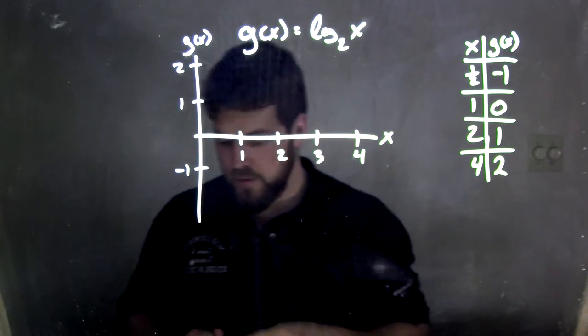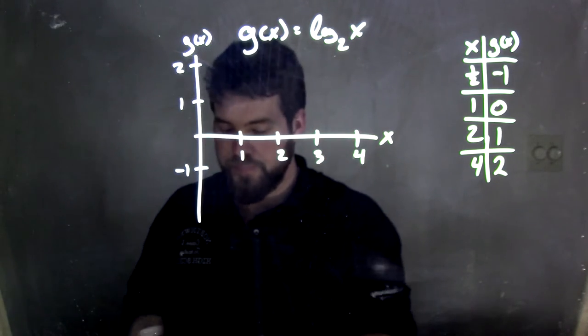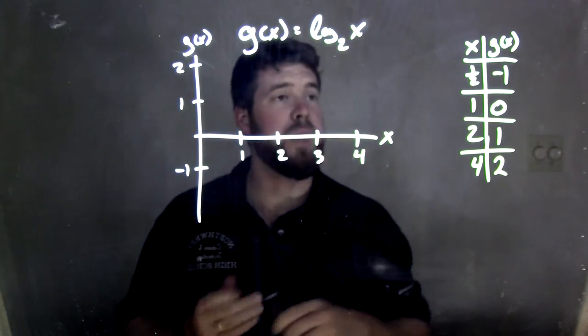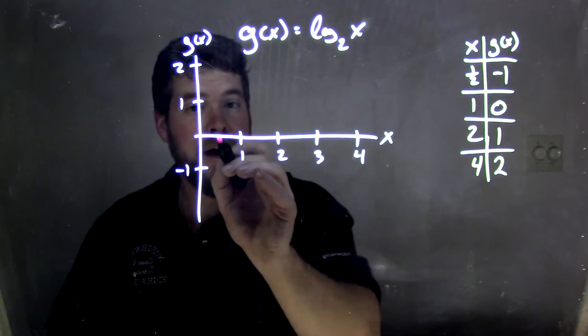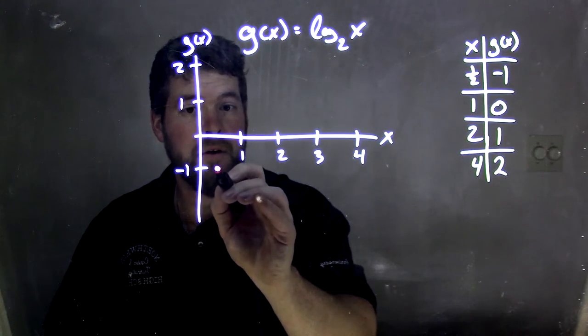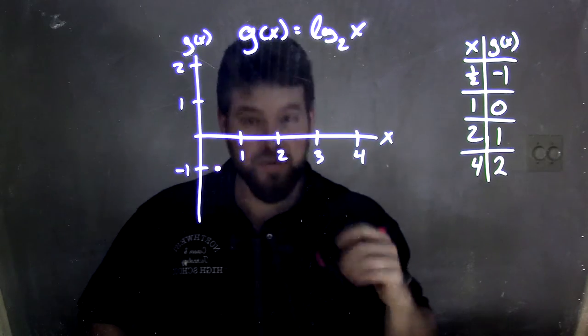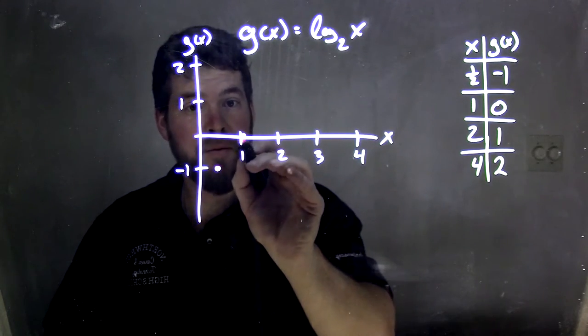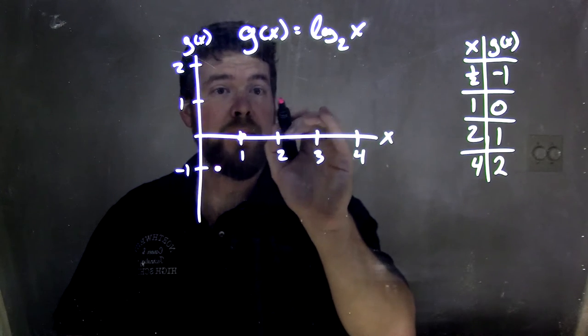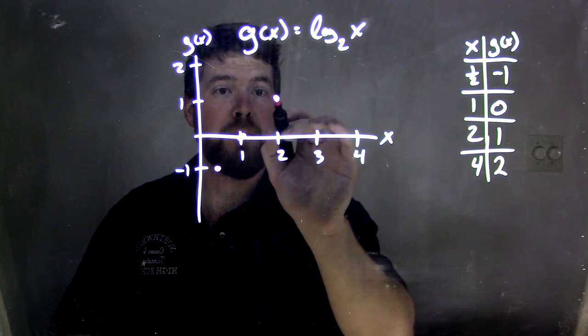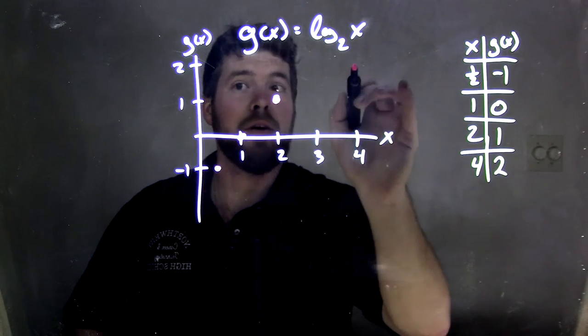So let's go plot some points. I'm going to graph this in the pink. Let's go plot our points we have here from our table. When x is one-half, halfway in between, I have a negative one right there. When x is one, I have a zero. And when x is two, I have a one. And when x is four, I have a two.